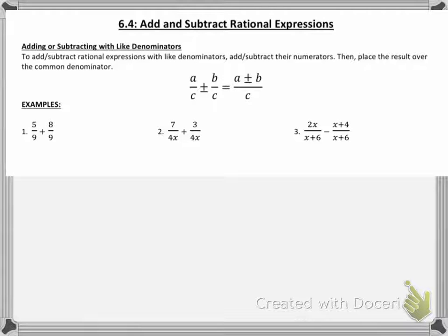Multiplying and dividing, it doesn't matter what your numerators and denominators are — you can always find a way to put those types of fractions together. Adding and subtracting, you have to be a little bit more careful. As you can see in the example at the very top with the algebraic setup, you have to have a common denominator, which in this case is labeled as C. It doesn't matter what your numerators are, but your denominator must be the same.